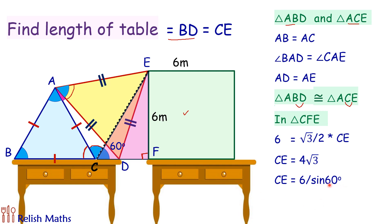Or simply we can use trigonometry. We can say that the length CE is EF/sin60°. Sin 60° is √3/2, so when we put the value of sin 60° as √3/2 we will get CE as 4√3. And here we have already concluded that CE and BD are representing the length of the table, and thus the length of the table is 4√3 meters.